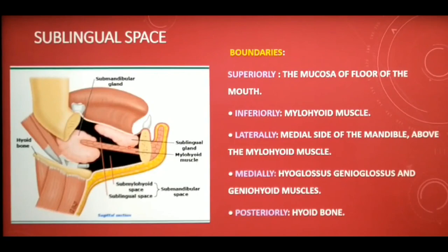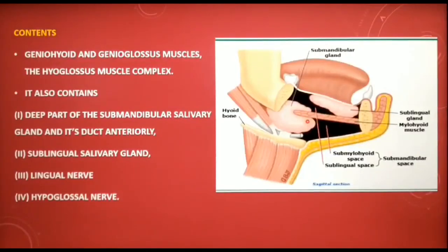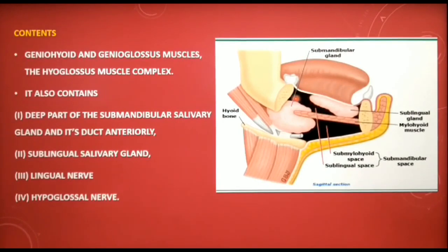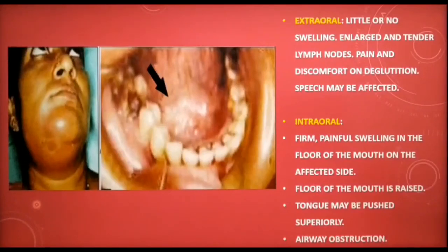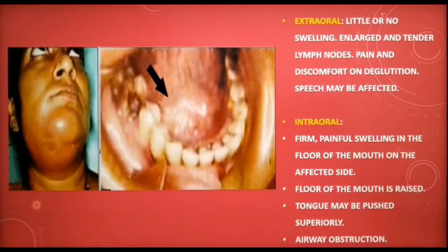The sublingual space contains the tongue muscles, the deep part of the submandibular salivary gland and its duct, the sublingual salivary gland, the lingual nerve, and the hypoglossal nerve. Extraorally there is little or no swelling; lymph nodes may be enlarged and tender. Pain and discomfort is experienced on deglutition and speech may be affected.